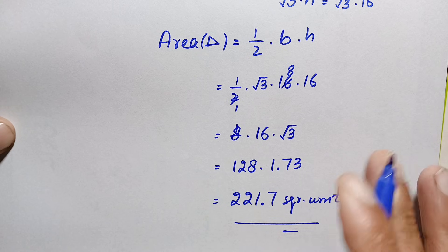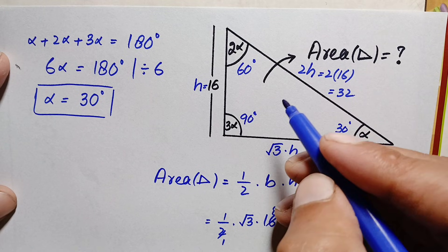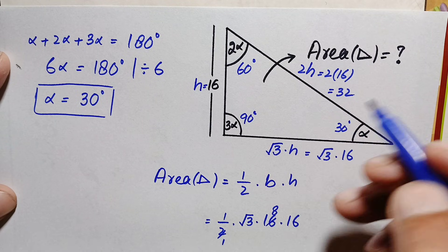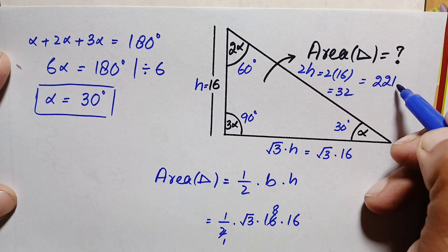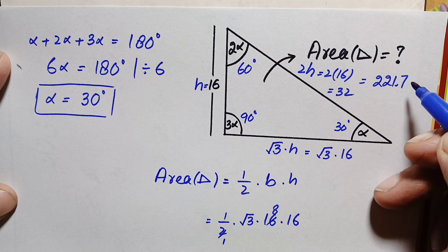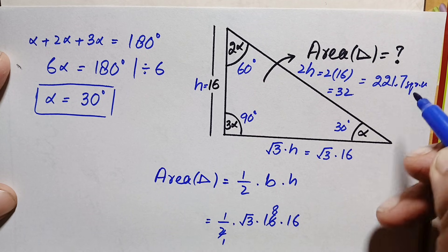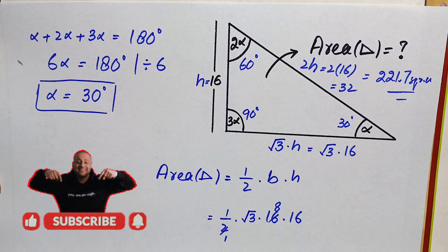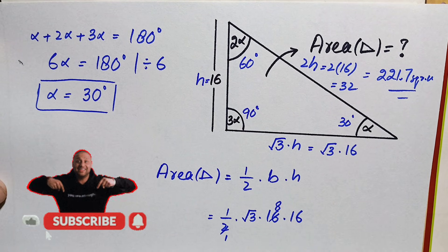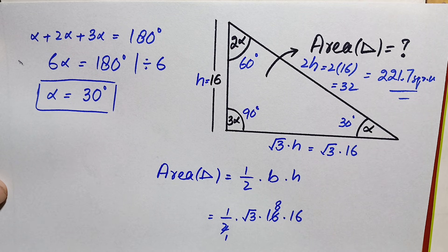The area of this special 30-60-90 triangle is approximately 221.7 square units — that is our final answer. Don't forget to subscribe to my YouTube channel for more interesting step-by-step geometry math solutions. Thanks for watching!